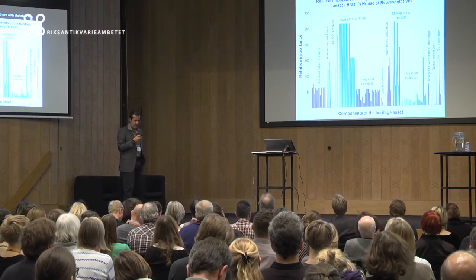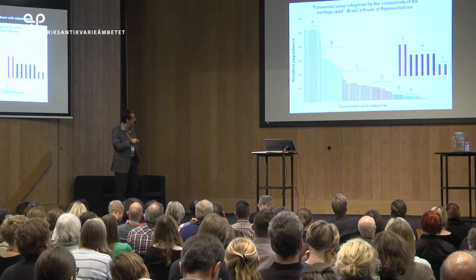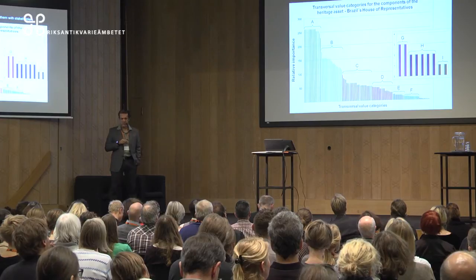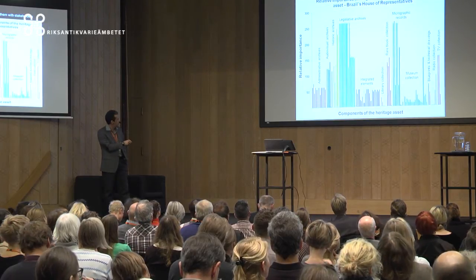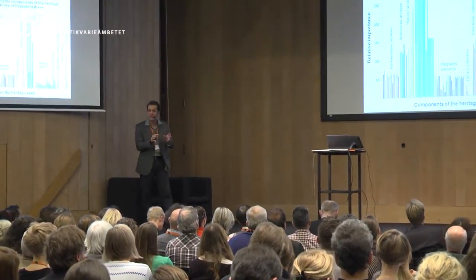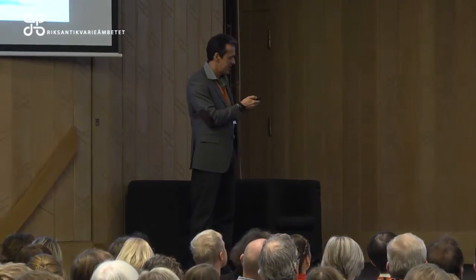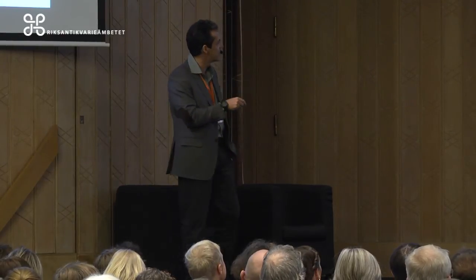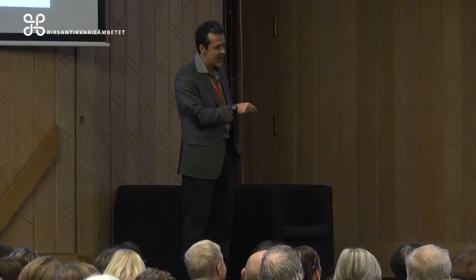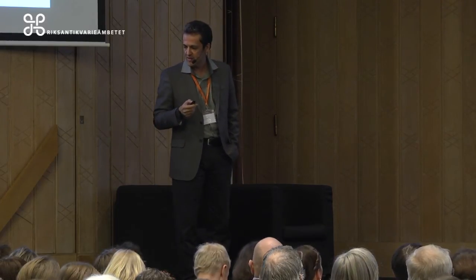Then we can group — so this is by existing categories. We can now make value categories: we just take the top ones — be it legislative archives or micrographic records — now we forget about which sector they come from and say these are the most valuable parts of the collection. It can be legislative, it can be micrographs, and so we make these value categories, which we use when we assess the risks.